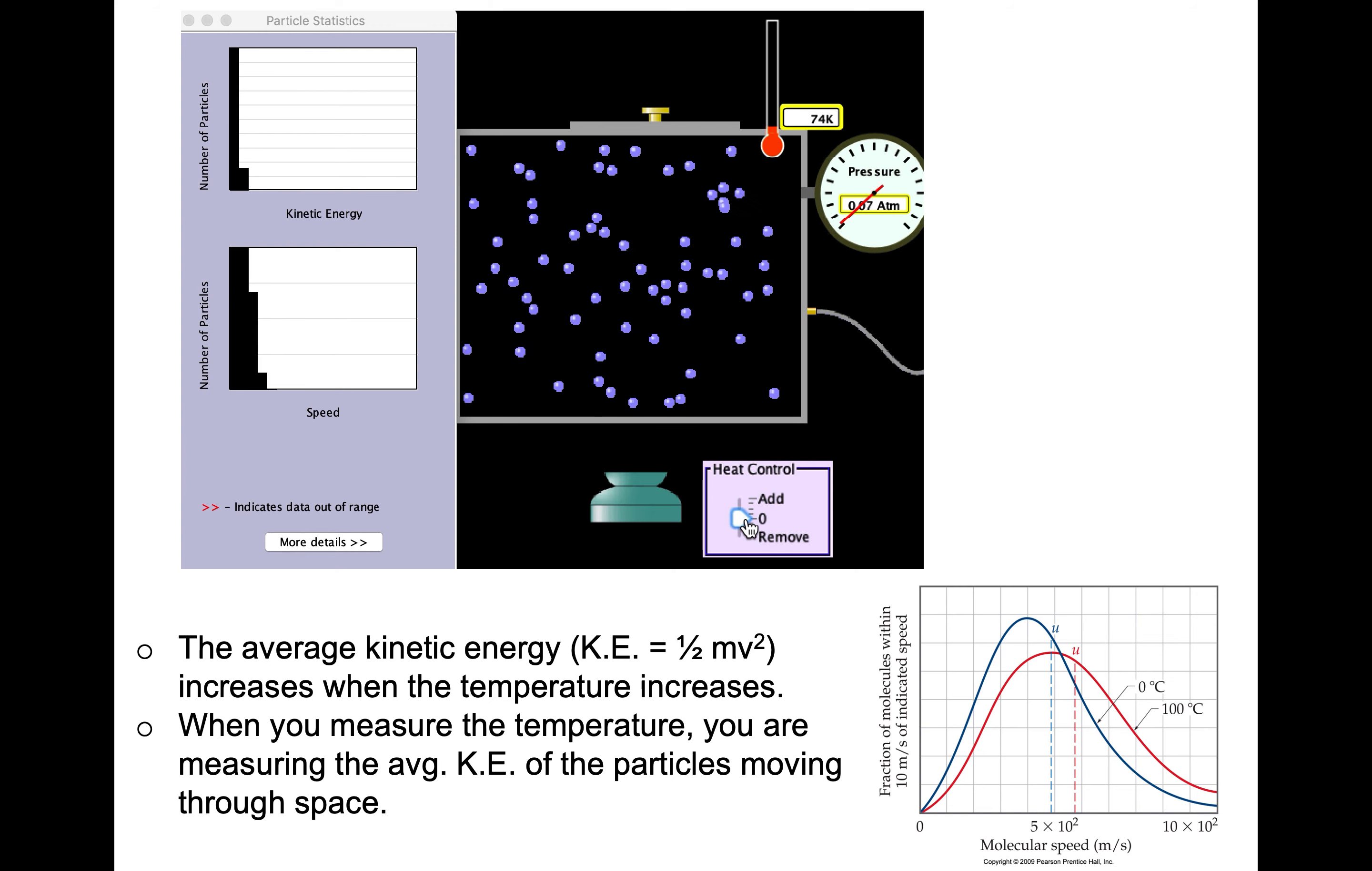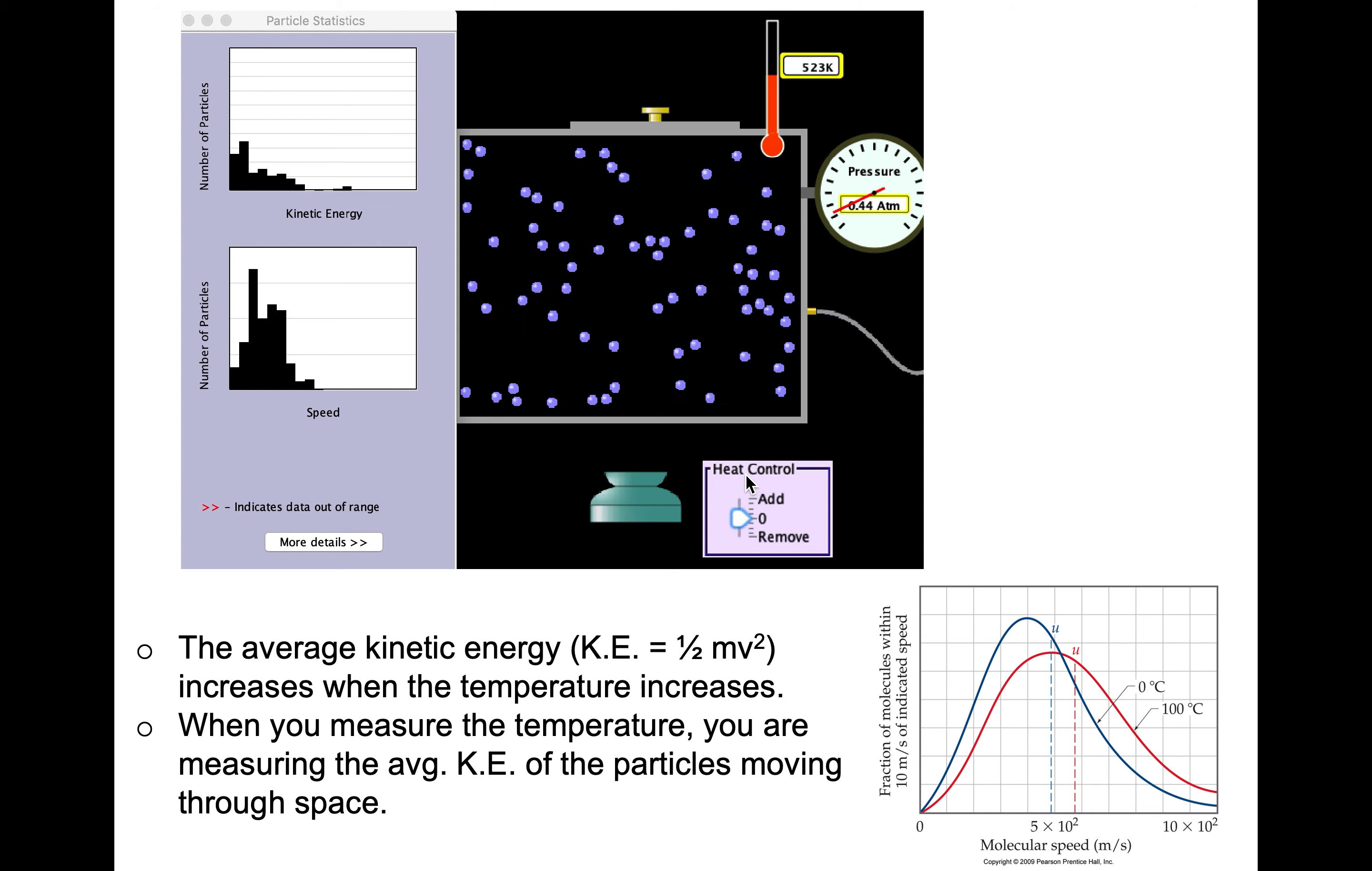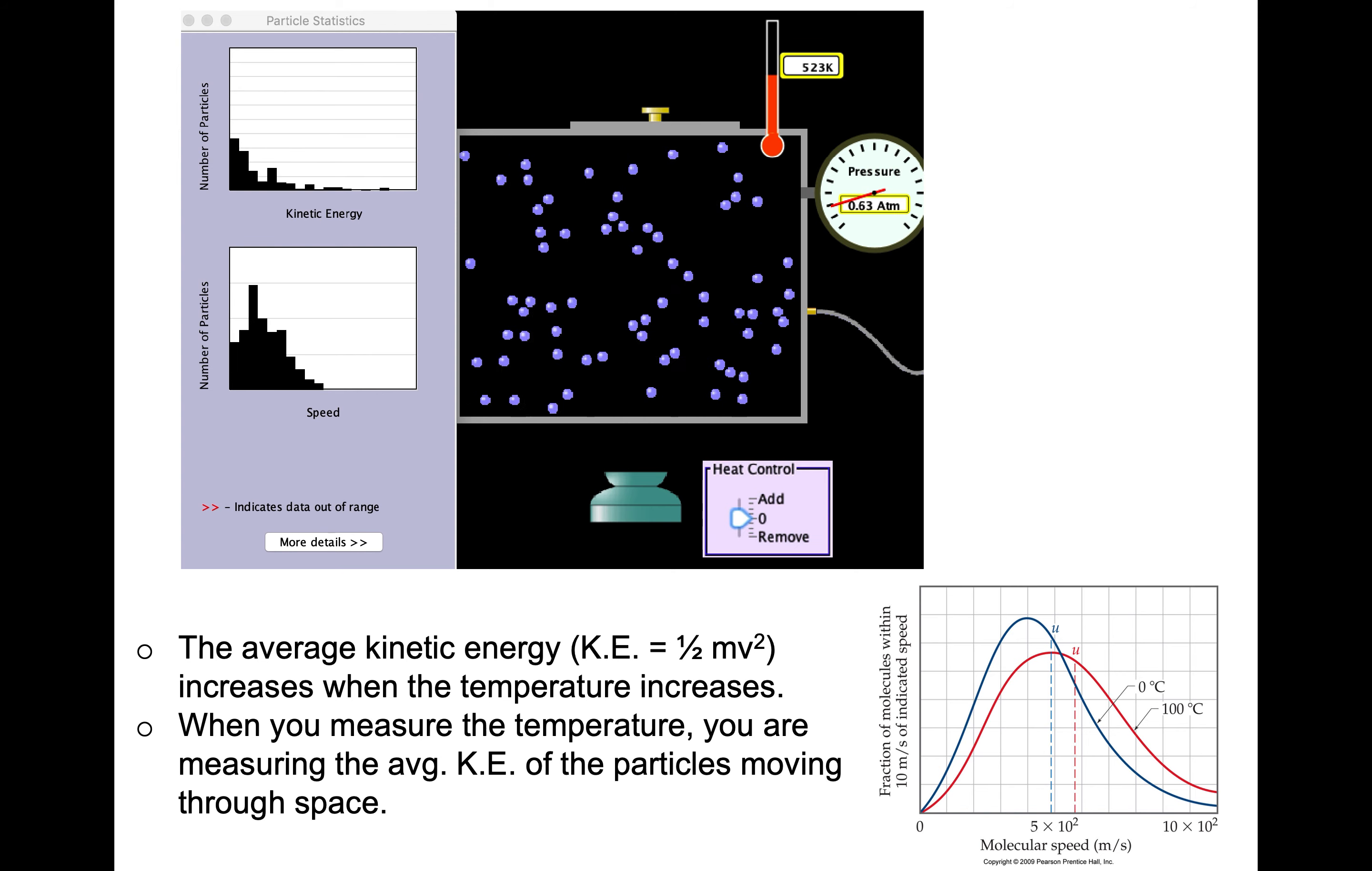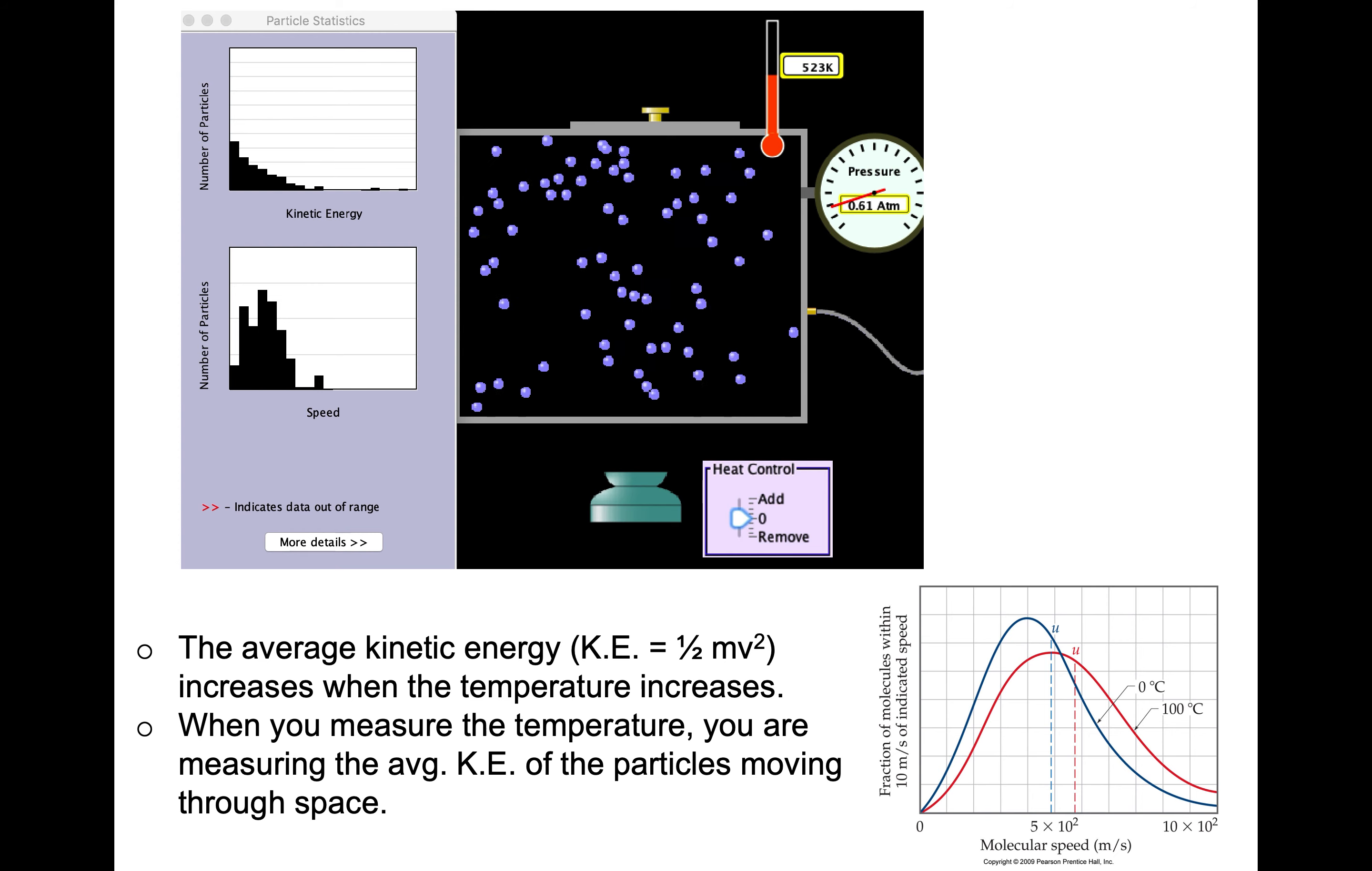On the left-hand side, we can see what that means in terms of the kinetic energy and the speed, with two different histograms. As heat is added, the temperature goes up. I see both the kinetic energy and the speed distributions being shifted to higher values. The average kinetic energy of these particles, where the kinetic energy is one-half mv squared, it increases when the temperature increases. When you're measuring the temperature, you are measuring this average kinetic energy of the particles as they're moving through space.